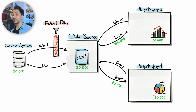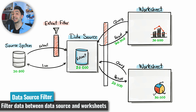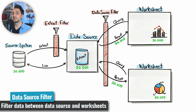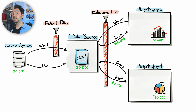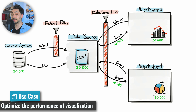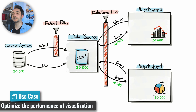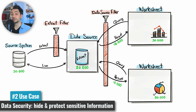Moving one step to the right, we have the data source filter, applied between the Tableau data source and the worksheets. Here, the data source filters the data first and then sends the results to the worksheets. Instead of sending 20k records, Tableau might send around 10k. The main purpose of the data source filter is to reduce the size of data — less data means less processing time and better response time. It also hides sensitive information from the worksheets and viewers.